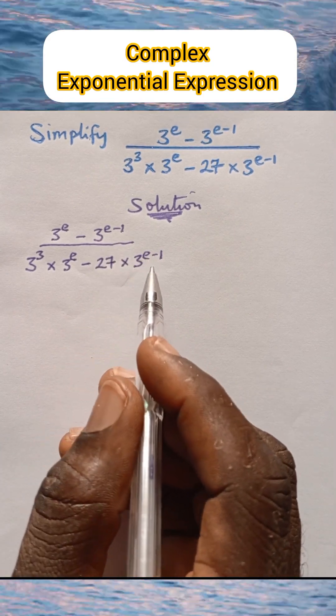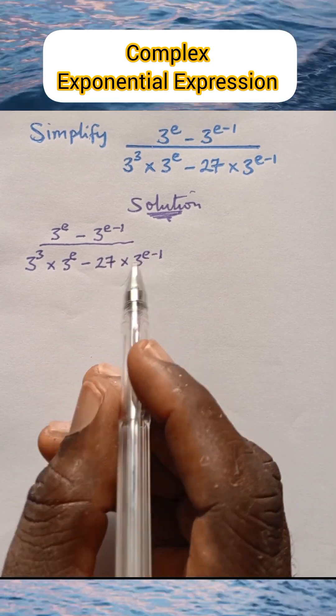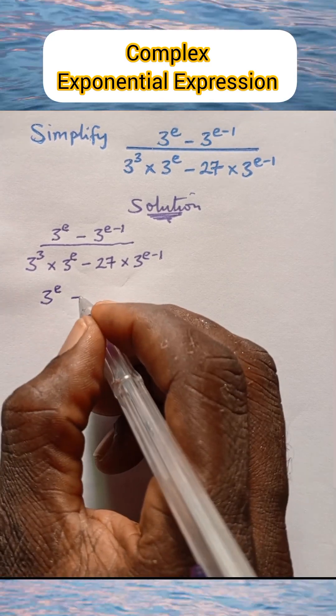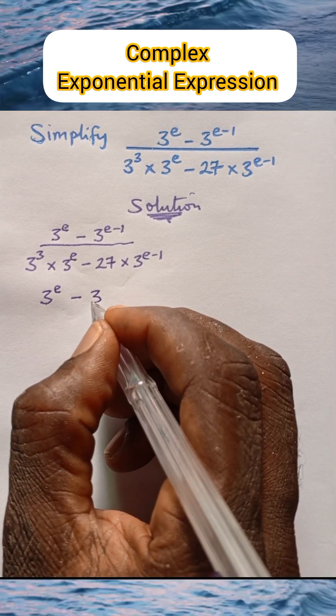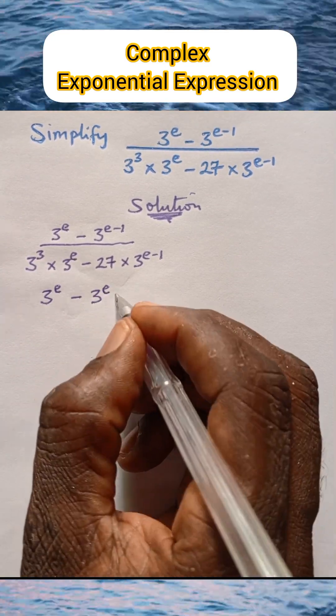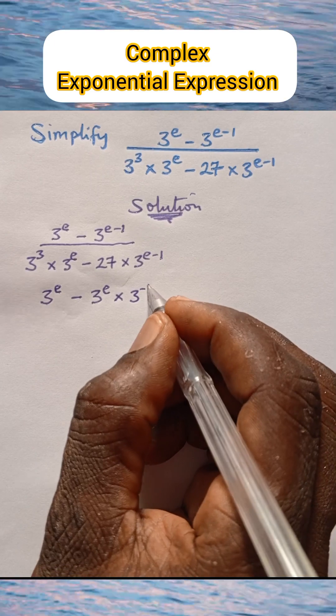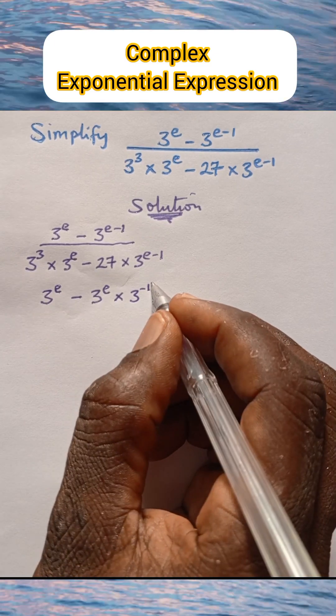Let's quickly do that. We have 3 raised to power e minus 3 raised to power e multiplied by 3 raised to power negative 1.